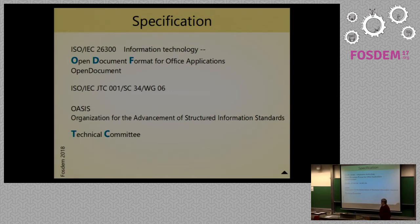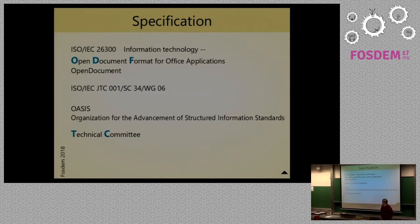This subcommittee has a scope of document descriptions and processing languages, and it deals with Office Open XML and EPUB as well. Although the standard is under the responsibility of ISO, actual development and maintenance is done by OASIS. OASIS is a non-profit consortium with membership of over 600 organizations and individuals, working in currently 64 technical committees. One of them is the OASIS Open Document Format for Office Applications project.